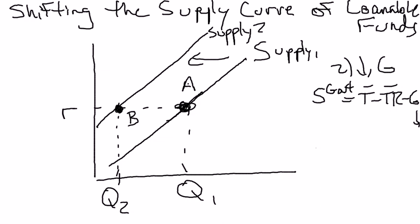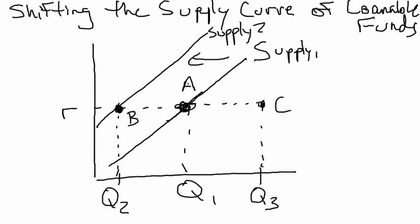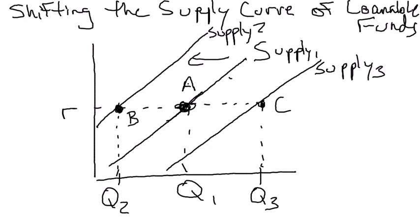We're decreasing government spending, so we're subtracting off a smaller number — that means government savings has to go up. Since national savings equals private savings plus government savings, and private savings is held constant, an increase in government savings means an increase in national savings. At the original real interest rate, the quantity supplied of loanable funds increases — let's say to Q3 — giving us a new combination at point C. That's not on Supply 1, so there's a new Supply 3, and the supply of loanable funds has shifted to the right.